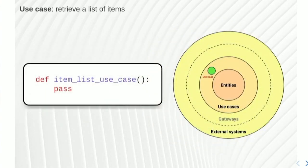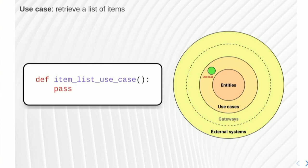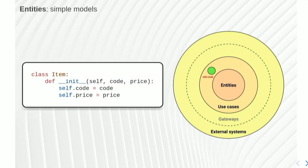The example today is simple. The code I will show is valid Python, but I stripped all the error checking. My use case is to retrieve a list of items — very simple. In this example, my use case is just a simple function that exists in the use cases layer. Then I define some entities — entities are models that represent real items in my business logic. In this case, something with a code and a price: a simple class that encapsulates data.